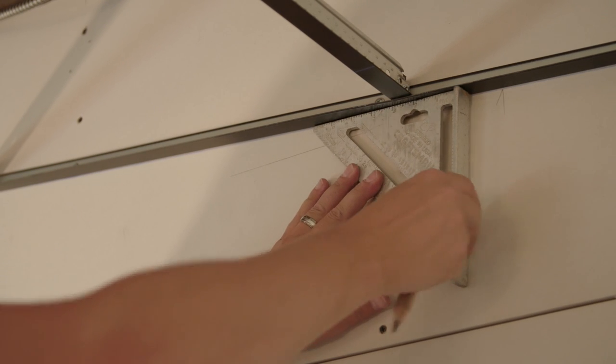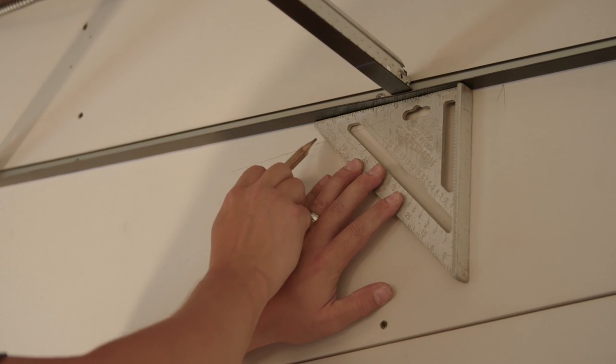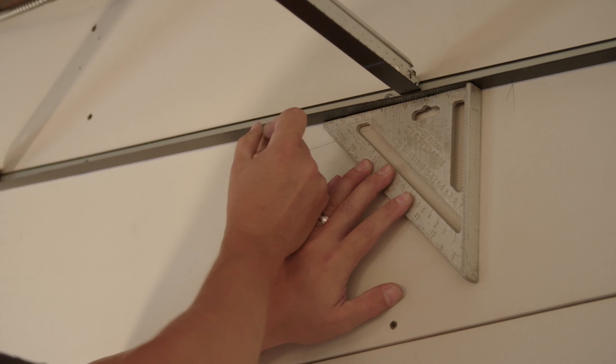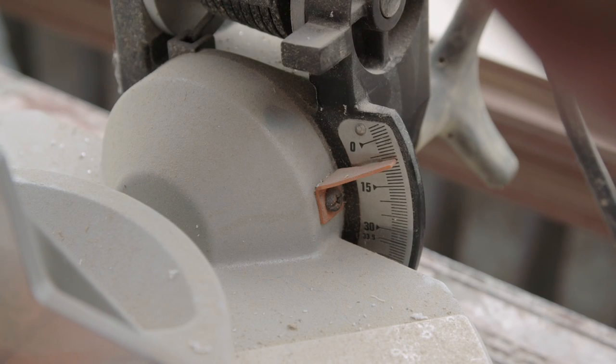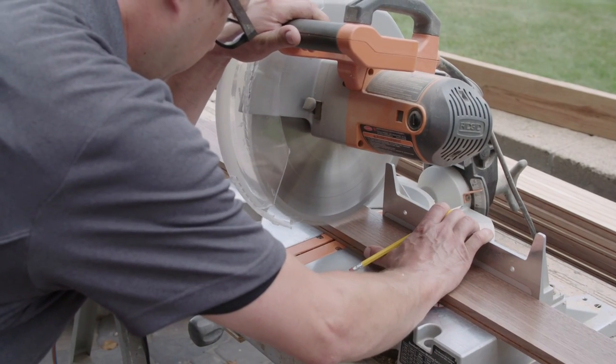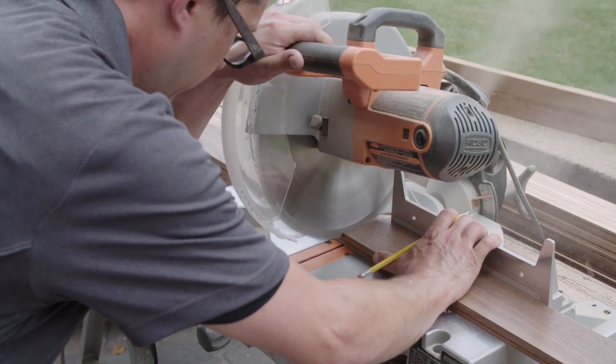Using a speed or rafter square, measure the grid angle from the level line. Here it's eight degrees. Set your chop saw for an appropriate angle cut. With a finish-grade carbide-tipped saw blade, cut the end plank.